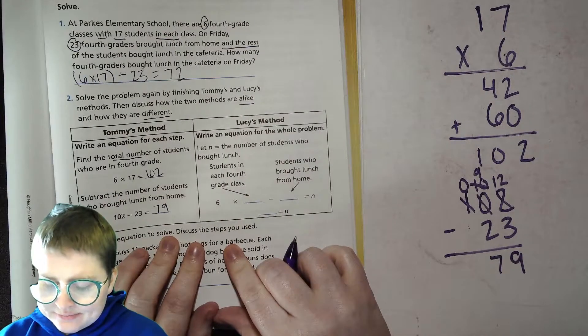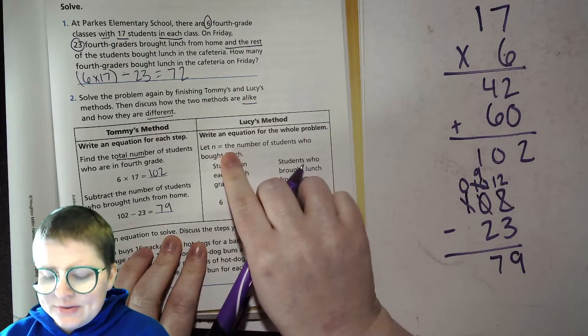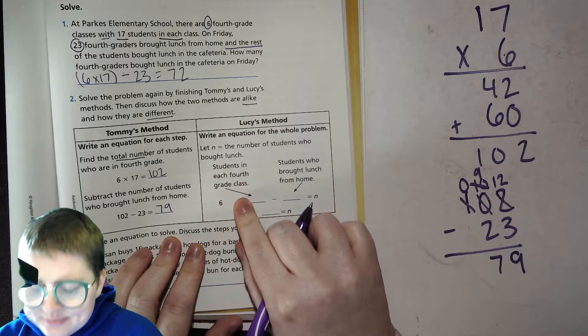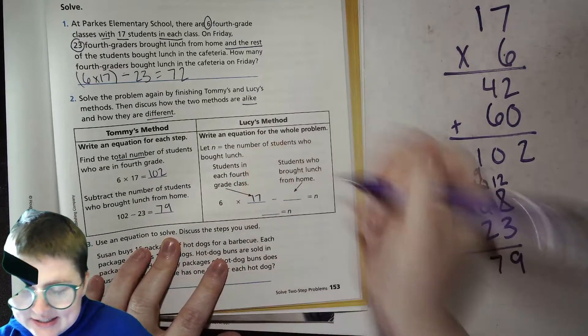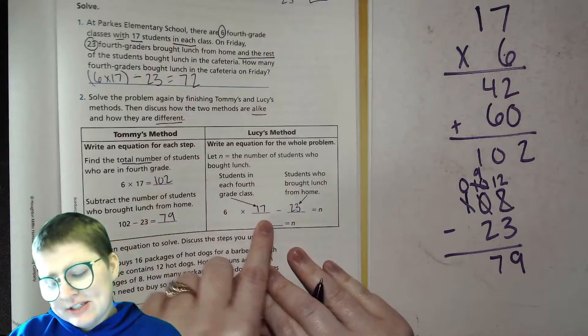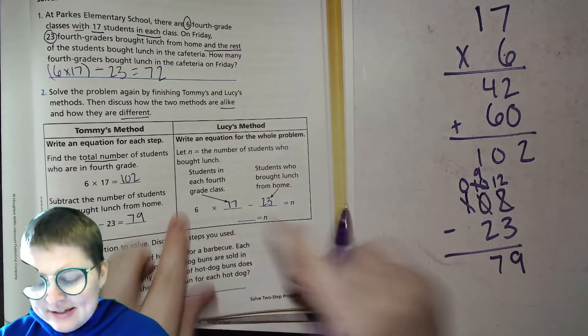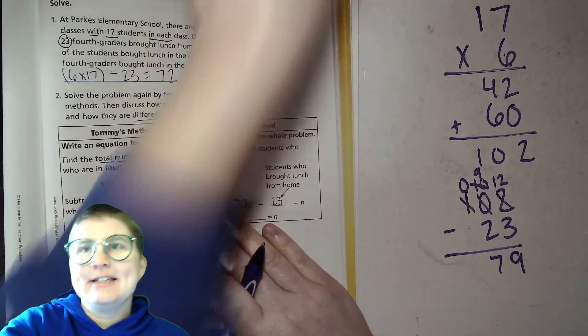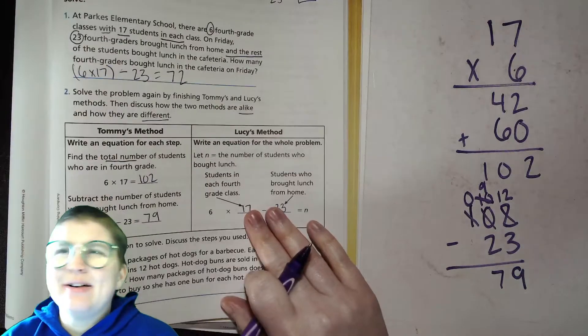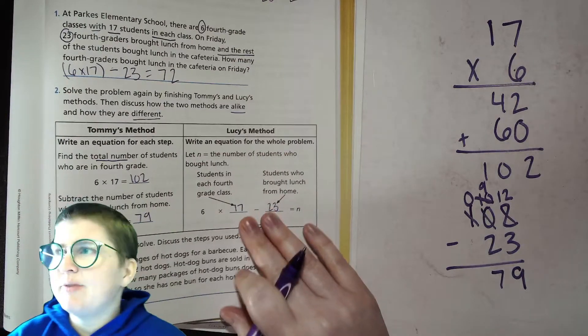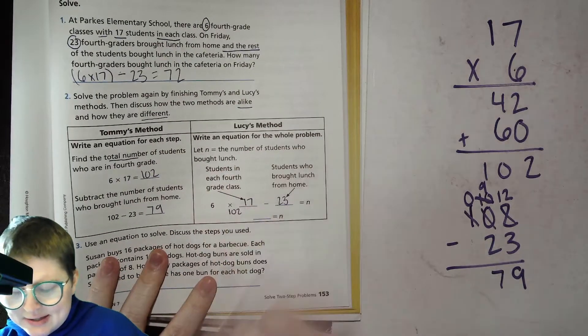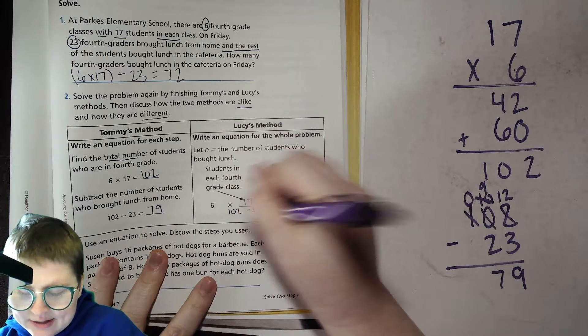Then Lucy's method, she says, let n equal the number of students who bought lunch. So then she has 6 times the number of students in each fourth grade class, which is 17, and minus the number of students who brought lunch from home, which was 23. Now you'll notice I put parentheses and she didn't, and because the first step when you go from left to right here is the multiplication step, you would do this first even without parentheses, but I don't know, it's kind of a preference of mine to just always put it just to be very clear and obvious. So then we're going to do from left to right. We simplify that first step. We have 102, which is 6 times 17, and we minus 23, and guess what? We get 79.